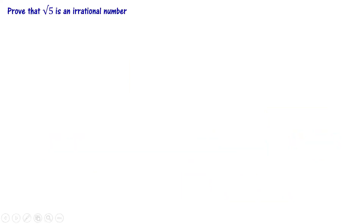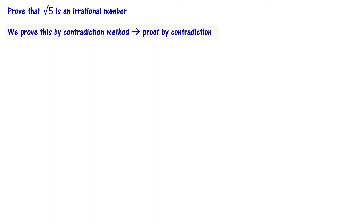Prove that root 5 is an irrational number. We use contradiction method — we prove this by contradiction method. That's why it is called proof by contradiction.